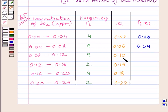9 multiplied by 0.10 is equal to 0.90. 2 multiplied by 0.14 is equal to 0.28. 4 multiplied by 0.18 is equal to 0.72. 2 multiplied by 0.22 is equal to 0.44.